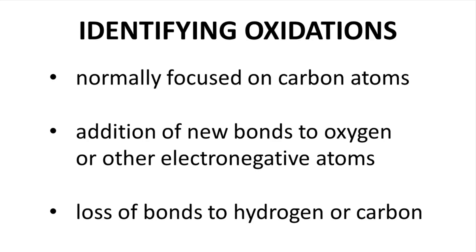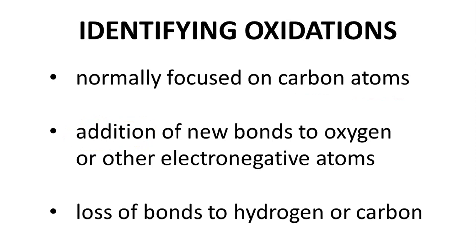Let's begin by discussing how you can easily identify an oxidation reaction. We are focused on carbon atoms, so look closely at your carbons. If a carbon gains additional bonds to oxygen or another electronegative atom, such as nitrogen or one of the halogens, then the reaction is likely an oxidation. If a carbon loses bonds to hydrogen, or often carbon, then the reaction is also likely an oxidation. There are formal ways to assign oxidation states to carbon atoms, but this video is not about assigning oxidation states — I just want to give these general quick tips before discussing reactions.